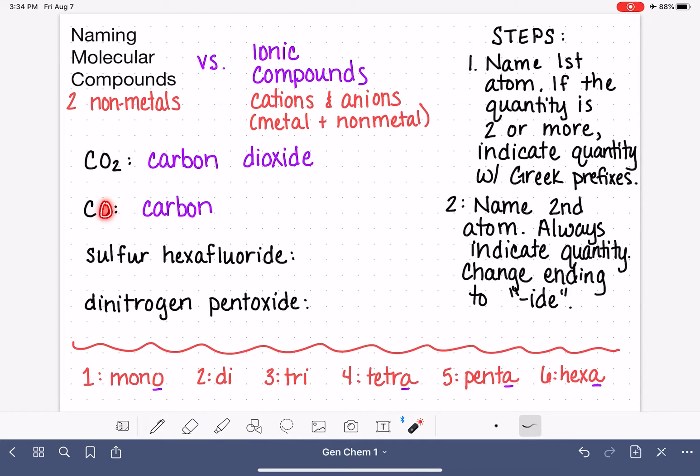Our second atom, again, is an oxide. We always indicate the quantity of our second atom. In the second atom, there's one. The prefix for that is mono. Now here's a situation where we do not use the O in mono. We just say monoxide.